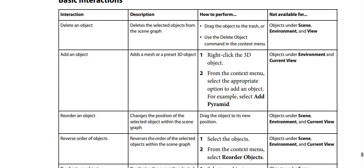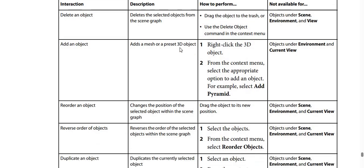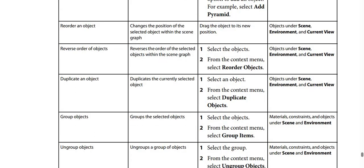For the add an object interaction, the description is: add a mesh or a preset 3D object. To perform it, right-click the 3D object, then from the context menu select the appropriate option to add an object — for example, select that parameter. Not available for objects under environment and current view.